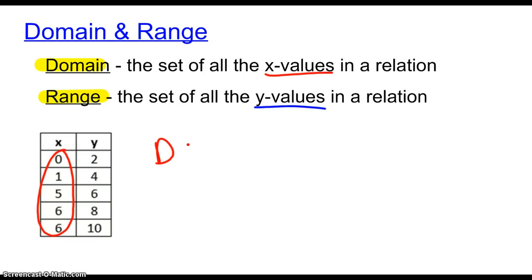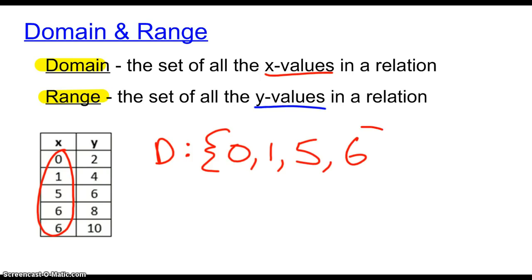For my domain, I'm going to look at that set right there and I can see I have a zero, a one, a five, and two sixes — but I only need to list out one. So the possible numbers in this particular set for x can be zero, one, five, and six. That's all we've got there.